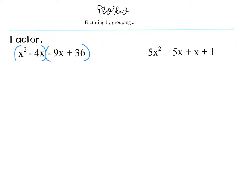Once I've grouped them into the two binomials, I'm going to look at my first binomial and see what the GCF is - the greatest common factor. The coefficient is a one, and a one and a four - the greatest number they have in common is a one, and they both have an x. So I'm going to take out a one x from that first binomial. Then I look at my second one and see that I have a negative nine and a thirty-six. There's an x in the first term but no x in the second, so I can't take an x out. I always want that first term to be positive, so I'm going to take out a negative nine - that is the greatest number they have in common.